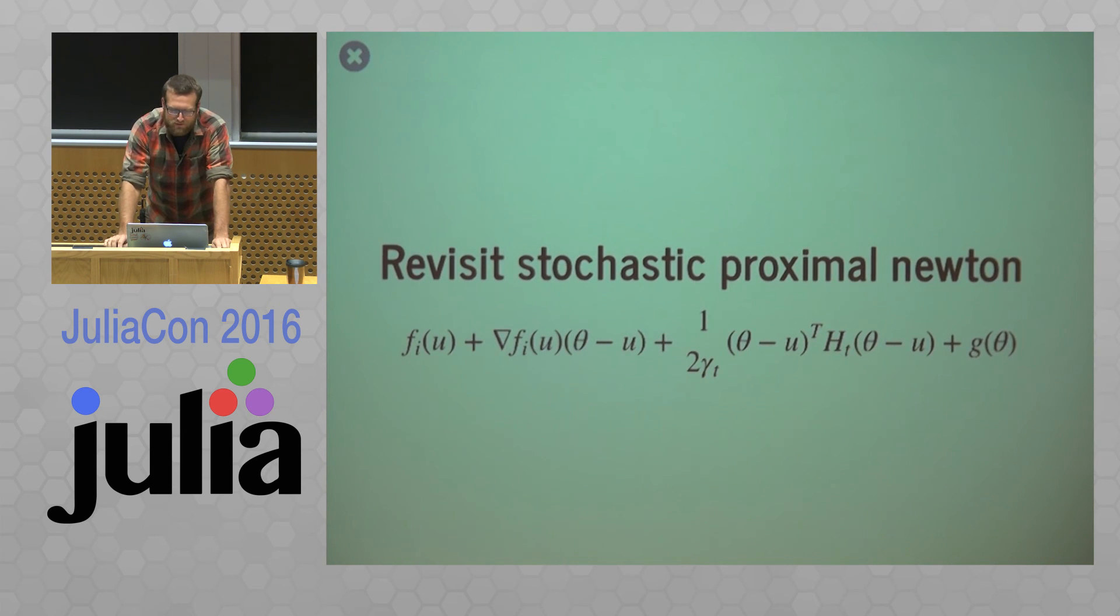So to revisit stochastic proximal Newton, essentially this model type is giving us our F, what our F should look like and what our gradient should look like. Our penalty is giving us what our G should look like, our weight is giving us what our gamma should look like, and the algorithm is telling us what this H matrix should look like. So because of all this really great abstraction stuff in Julia, I can kind of implement all these things at once, and it's really great.